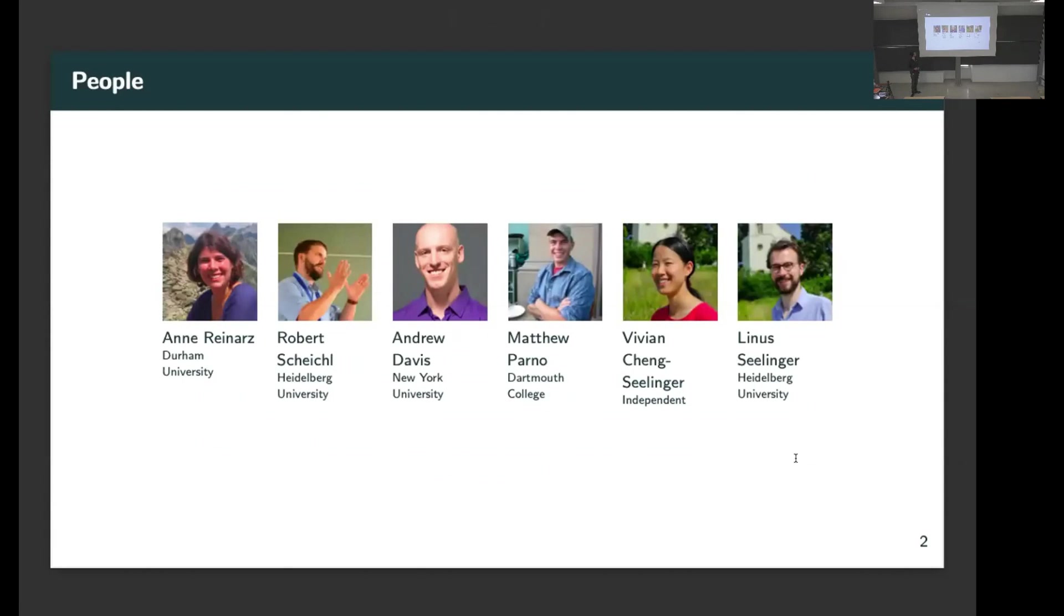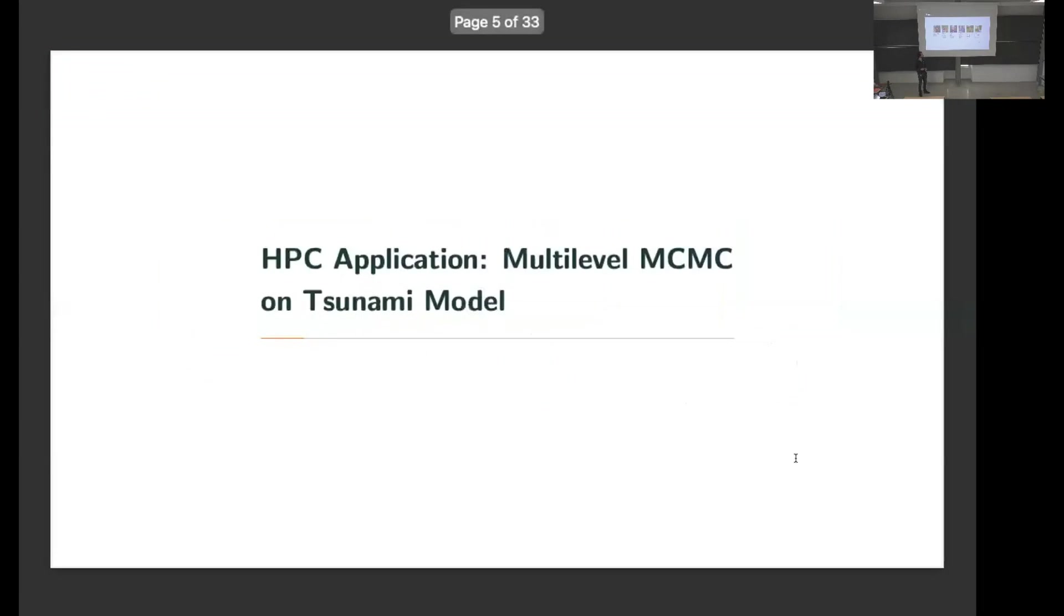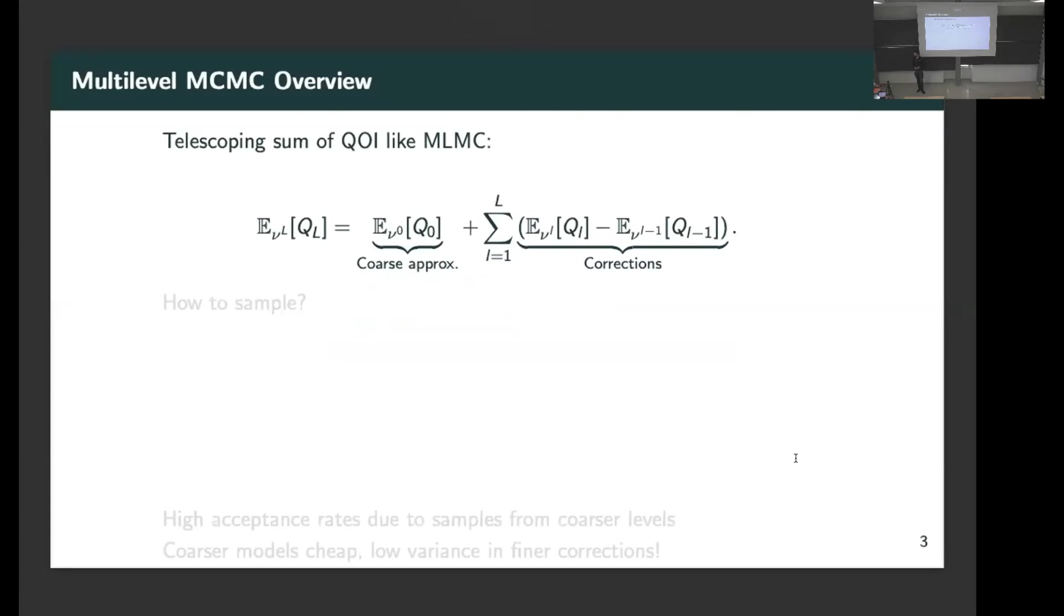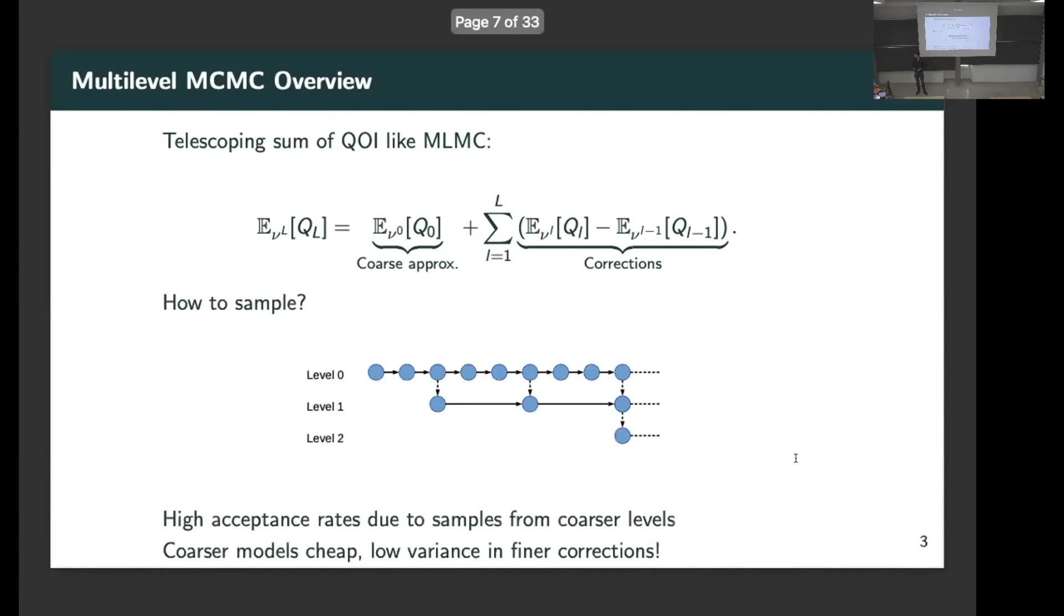The exemplary application I'm going to show is multilevel Markov chain Monte Carlo on a tsunami. We've seen the multilevel idea often enough. For multilevel Markov chain Monte Carlo, it's essentially the same. There are some additional intricacies.